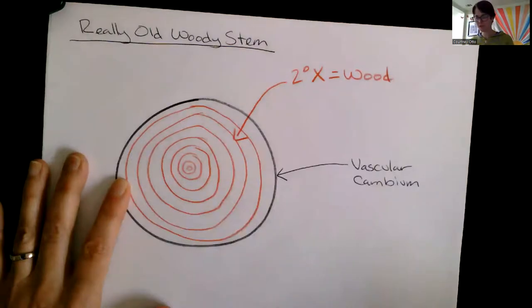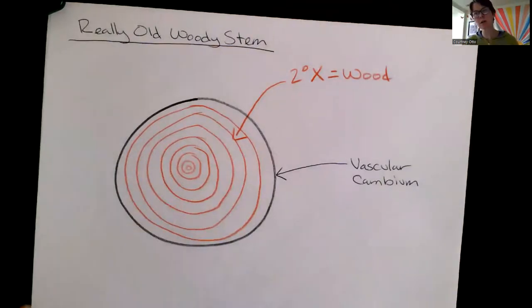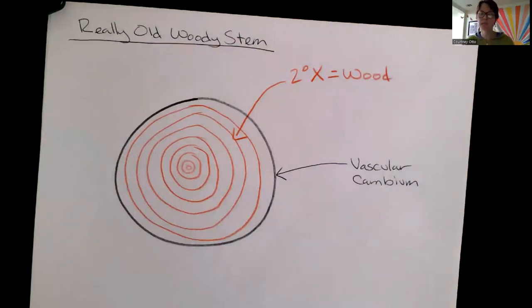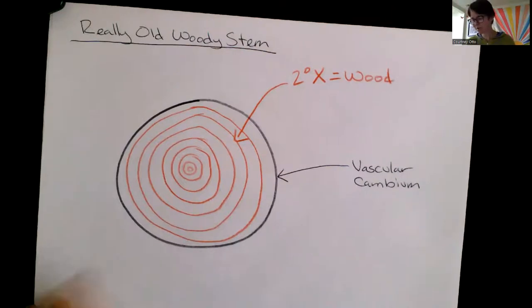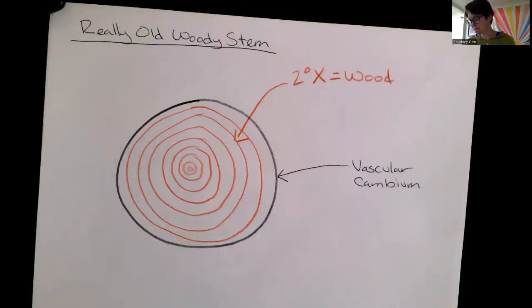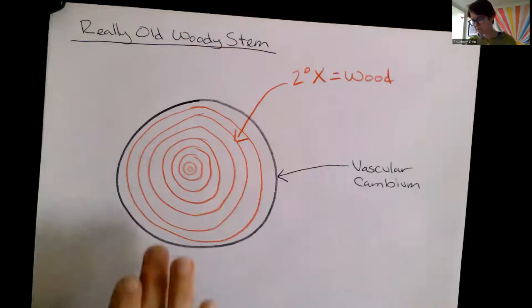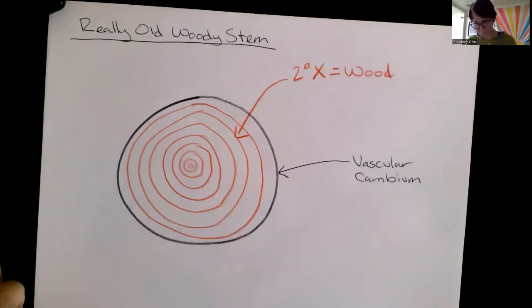Right, wood is secondary xylem and it forms these layers. We're going to talk a little bit more about growth rings when we see this material in lab, but it forms these layers due to the cambium shedding down in winter. So that's our secondary xylem.